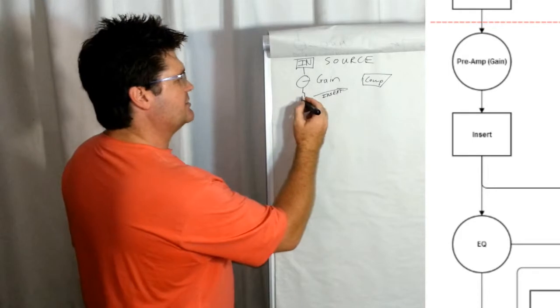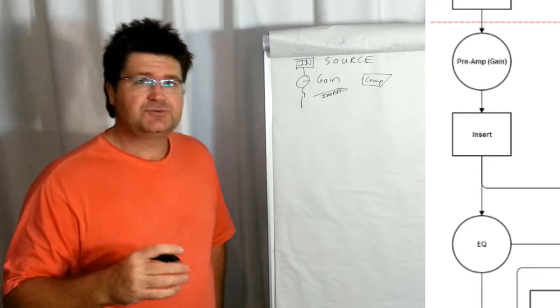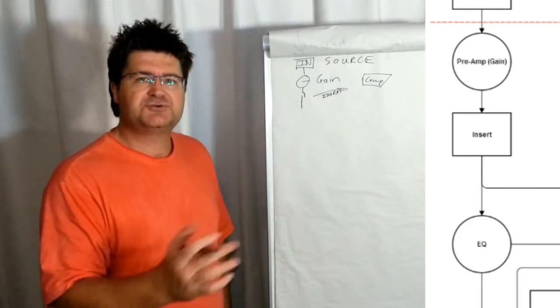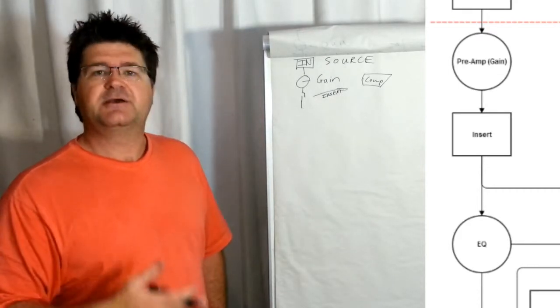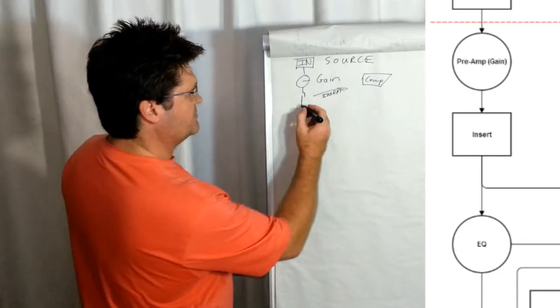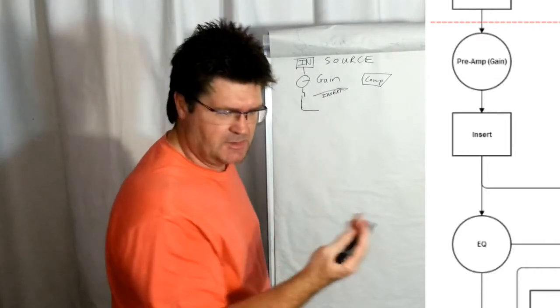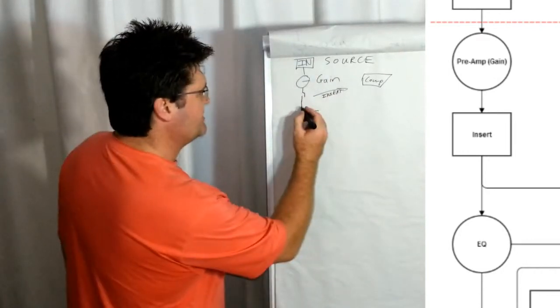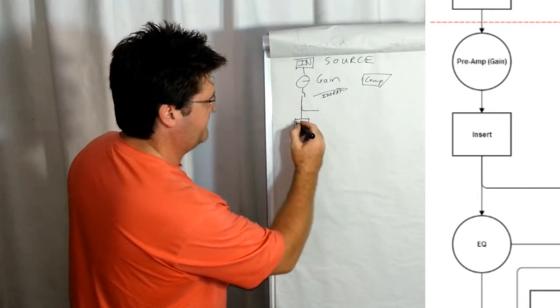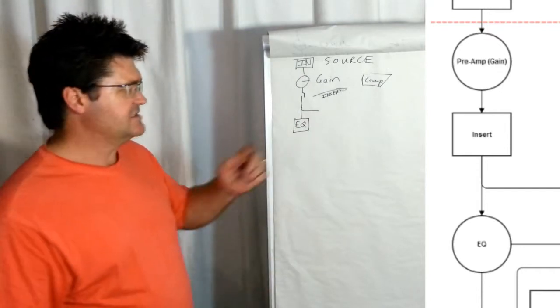After the insert, the signal separates into two. It doesn't have to. It has the option to do that. And that will depend on how you set up your desk for your use and your application. The signal splits, and it goes this way. It's, say, to the auxiliaries, and it goes straight on into the EQ, or equalization.